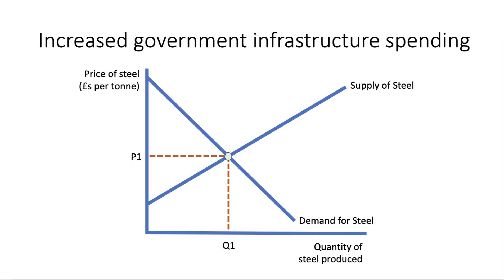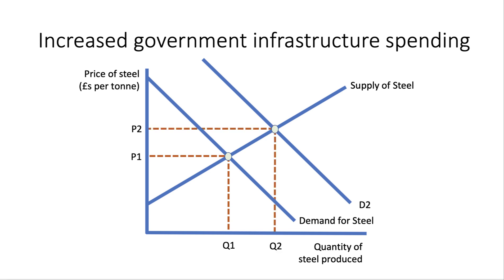First example: increased government infrastructure spending. Infrastructure spending adds to the demand for steel — perhaps steel used in new bridges, hospitals or transport links. The demand curve shifts out to the right to D2, and ceteris paribus the market price rises from P1 to P2 and quantity expands from Q1 to Q2.